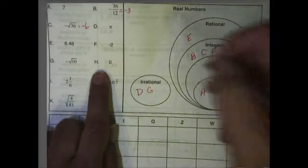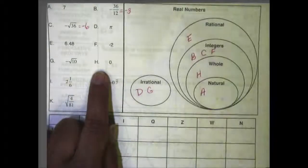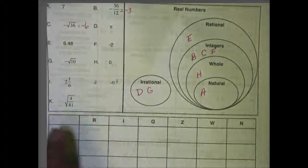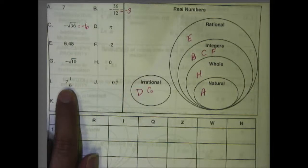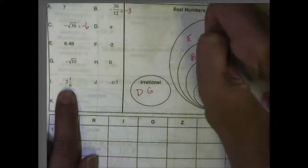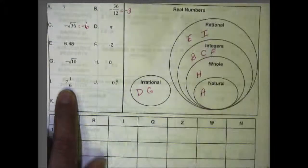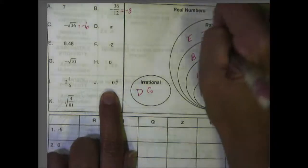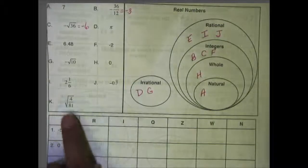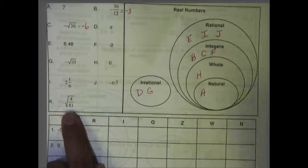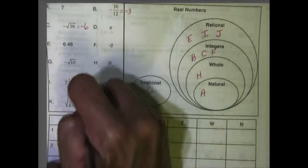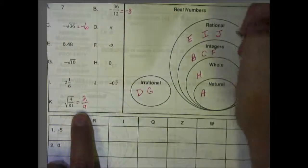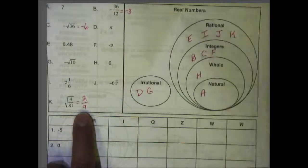H is zero. Remember that zero — the first time we see zero in the categories is under whole. Two and one-sixth is a fraction, so it has to fit in either rational or irrational; in this case it's going to be rational. J is negative 0.7 repeating. Remember that rational includes repeating decimals, so that would go under rational. And K — if I simplify the square root of 4 over 81, I get 2 over 9, and 2 over 9 is a fraction that is going to be rational.